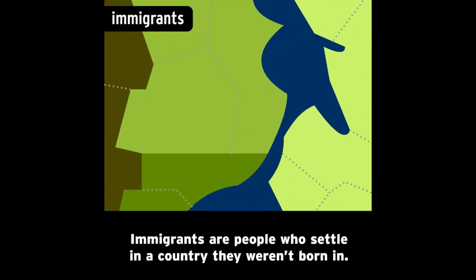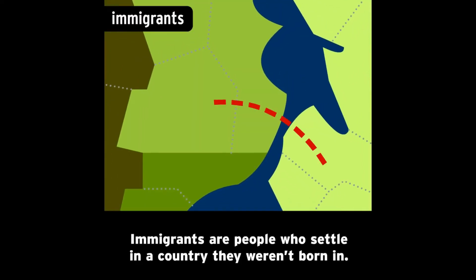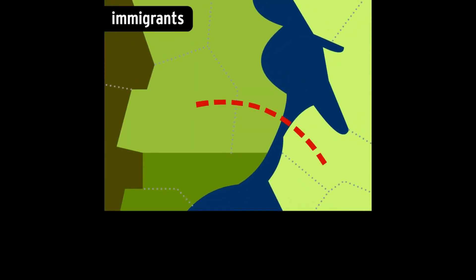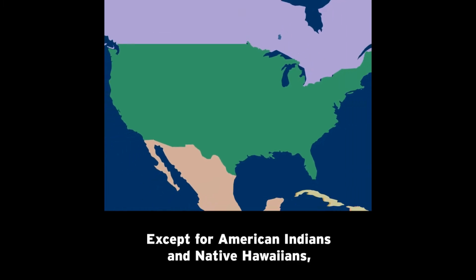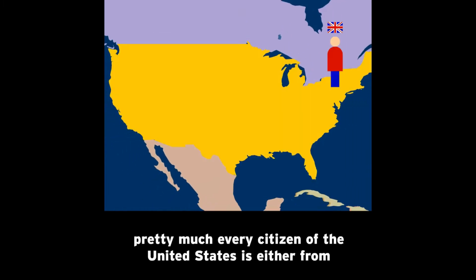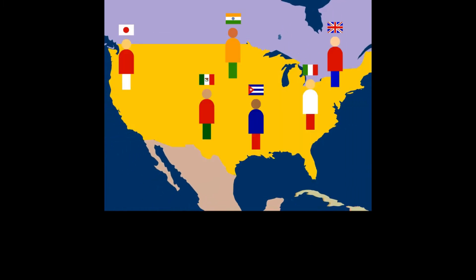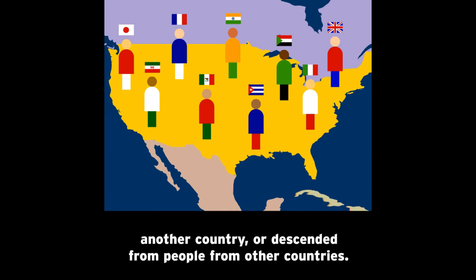Immigrants are people who settle in a country they weren't born in. Except for American Indians and Native Hawaiians, pretty much every citizen of the United States is either from another country or descended from people from other countries.